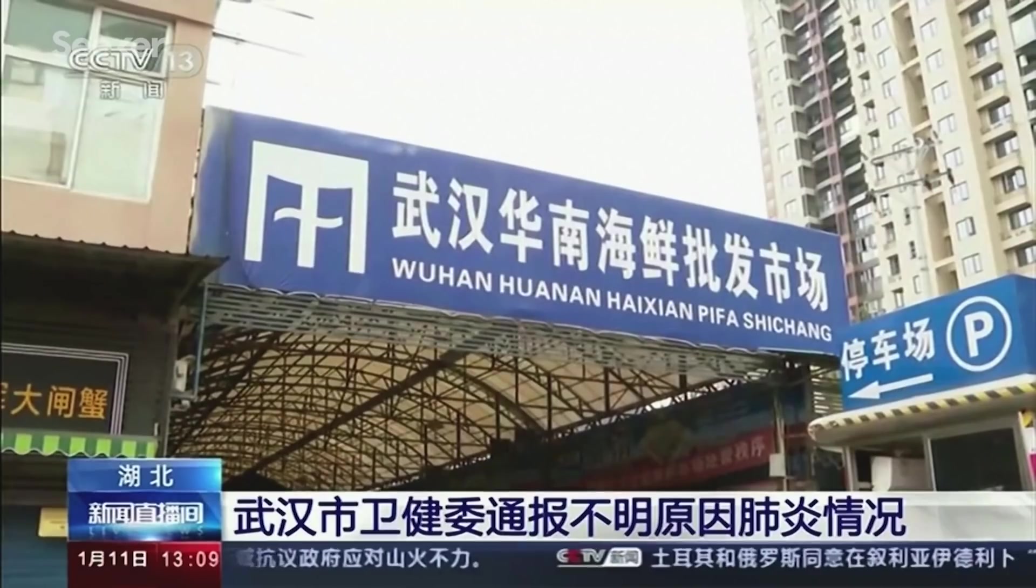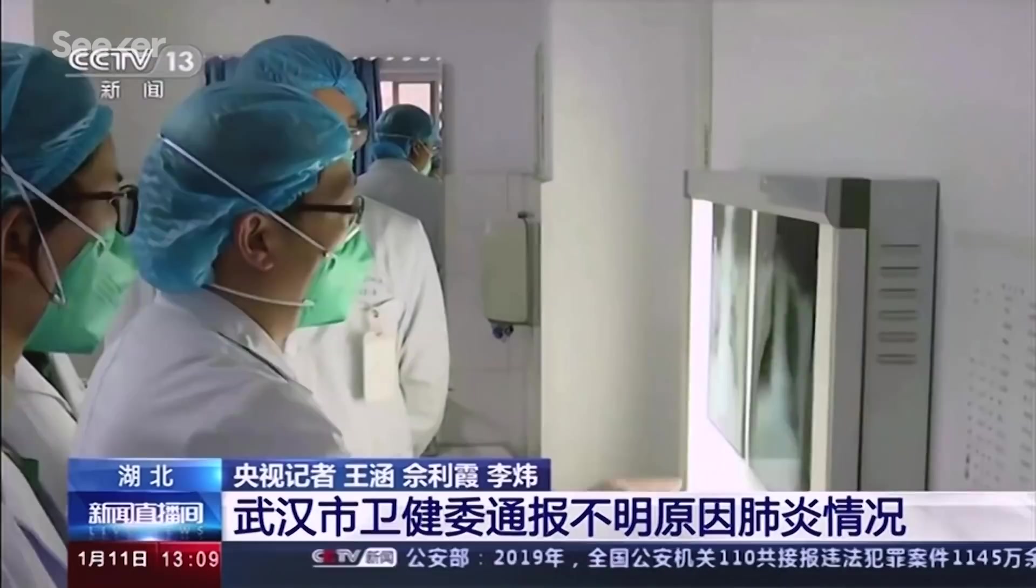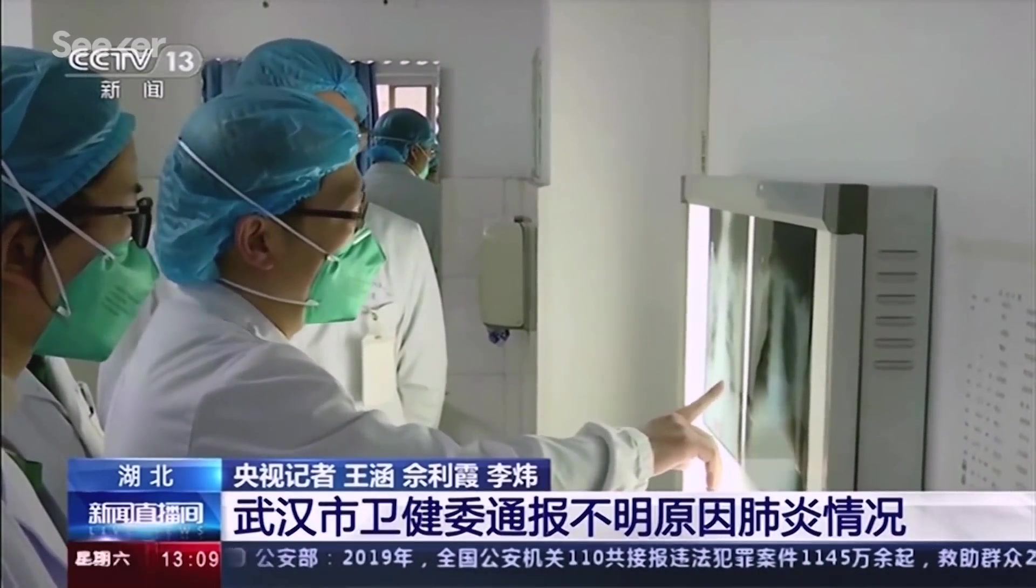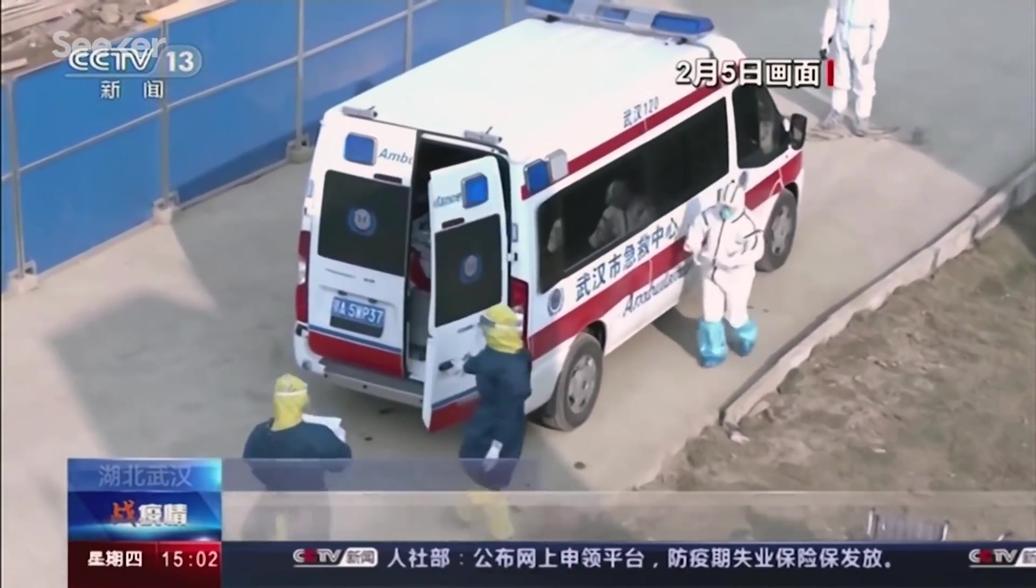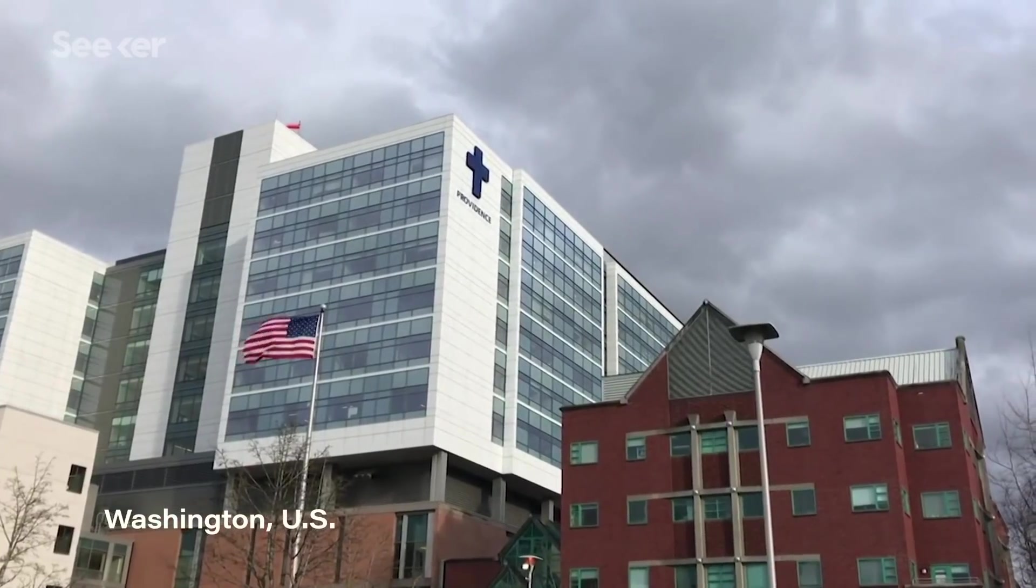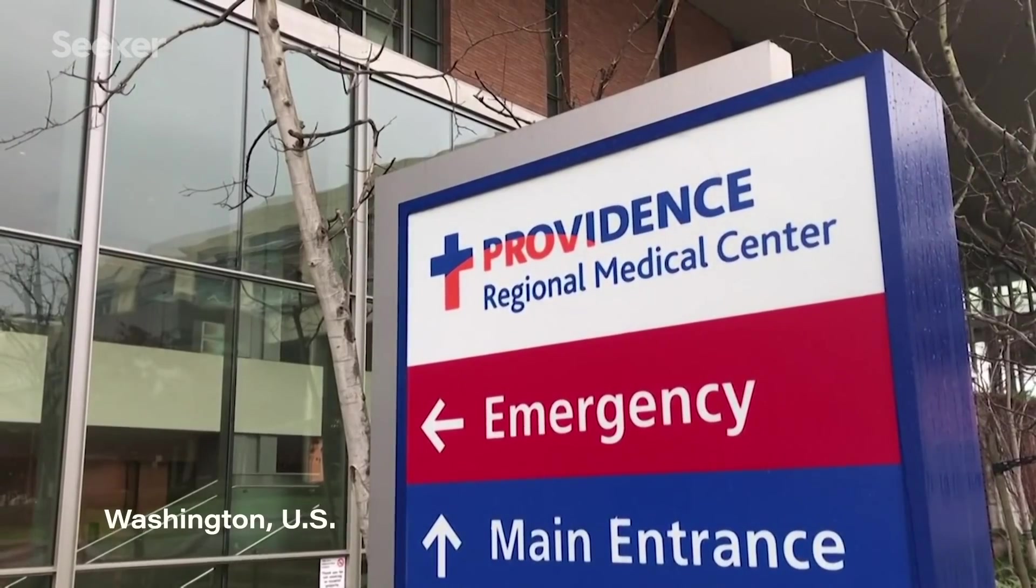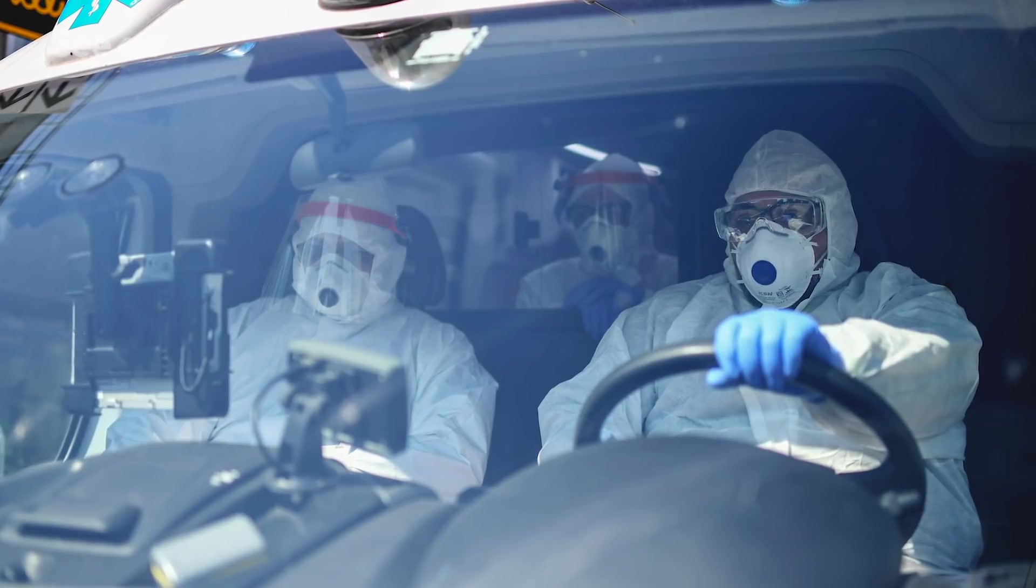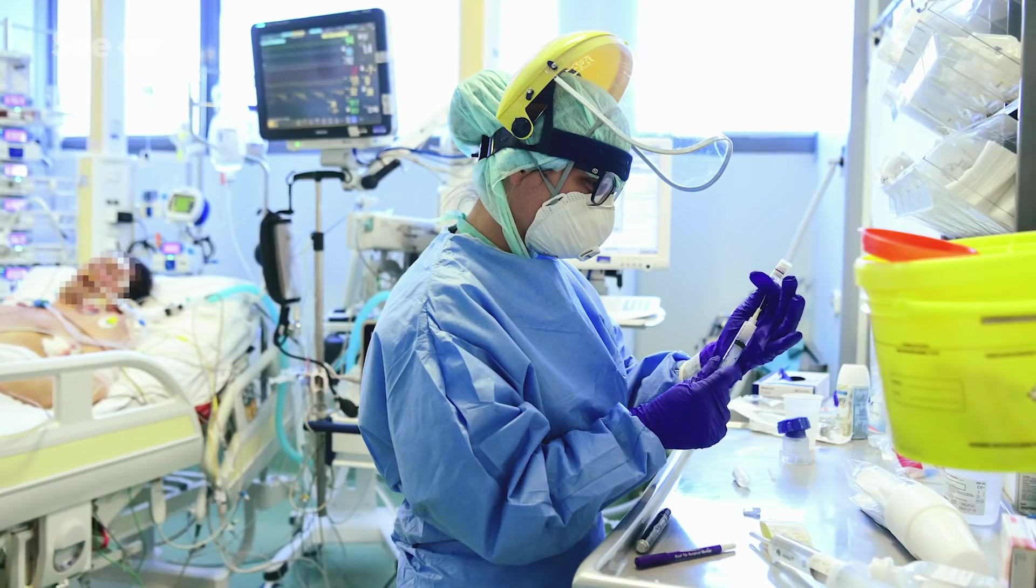The pandemic started in China and certainly we knew in December that something unusual was going on there, but it wasn't clear in December 2019 that this would spread anywhere else. By January the first case occurred in the United States and by then our team got concerned that we really needed to activate around this.